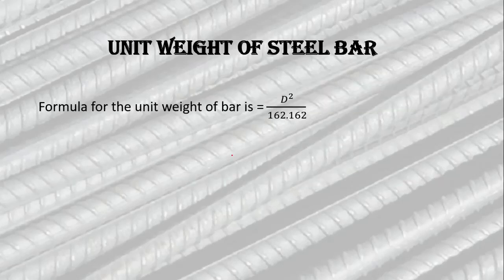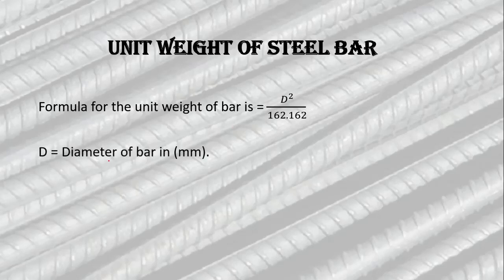First, we will calculate the unit weight of a steel bar using the formula d² / 162.162. This formula has some limitations: the diameter must be in millimeters, and the resulting unit weight will be in kilograms per meter.